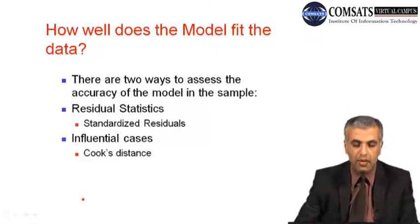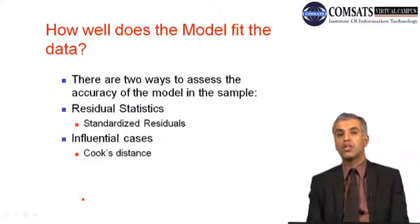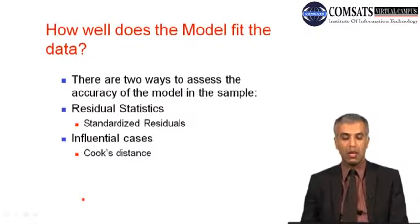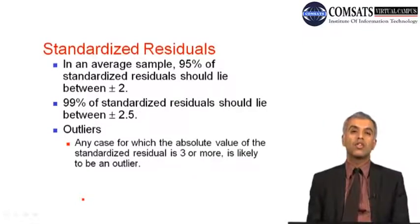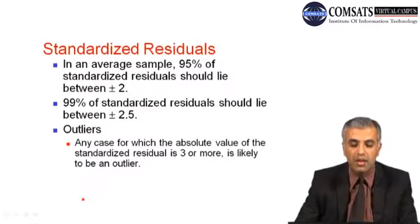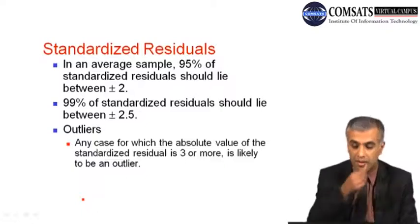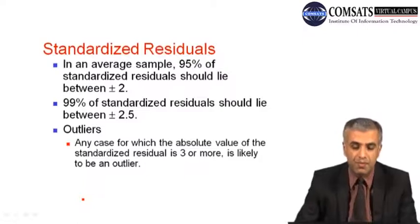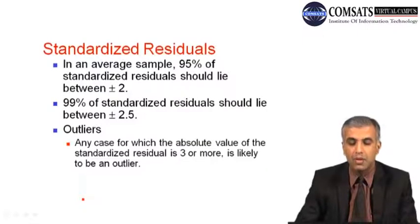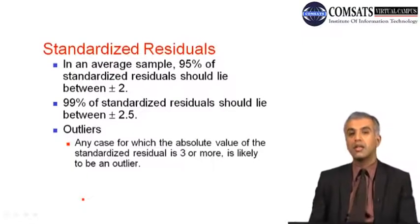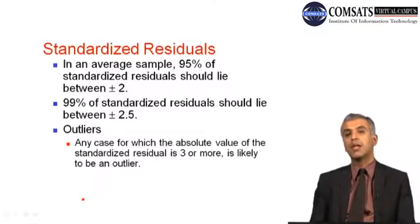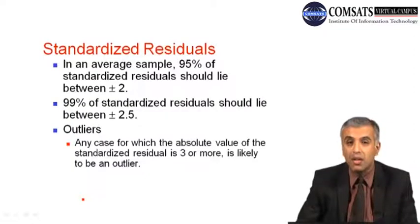Then we are dealing with influential cases, also termed as outliers. These outliers are identified through a technique called Cook's distance, which should be less than 1. For standardized residuals, the empirical rule applies: 95% of standardized residuals should lie between plus and minus 2, and 99% should lie between plus and minus 2.5. To identify outliers in residuals, the limit is 3 — if residuals cross the value of 3, that respective value is an outlier.